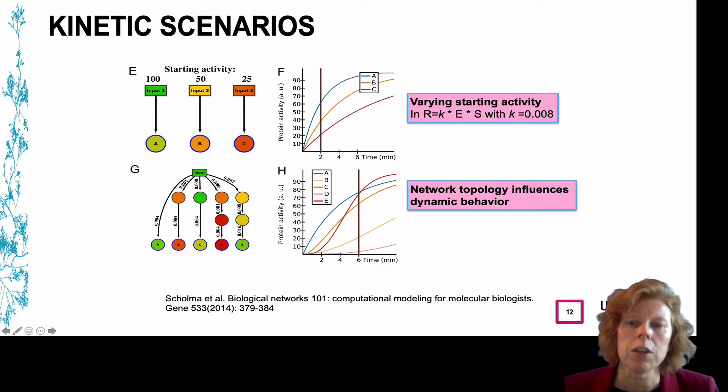The network topology also influences the dynamic behavior of the nodes. So you can change by adding multiple nodes to obtain even sigmoidal activity curves in these cases.